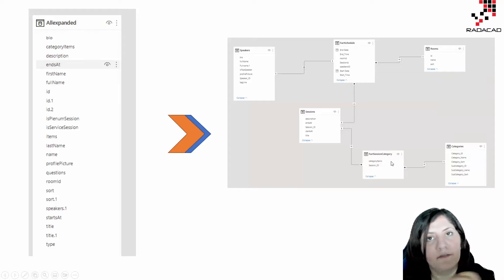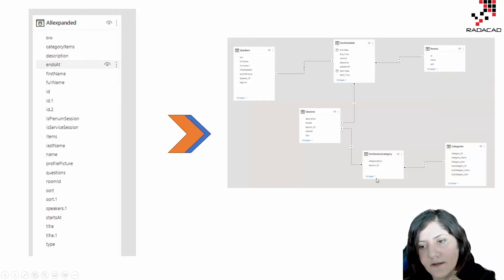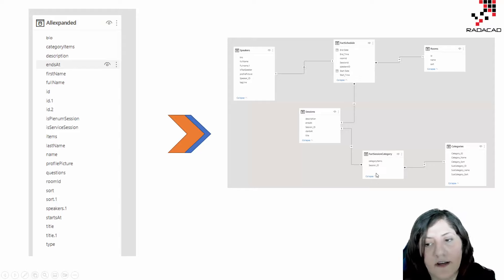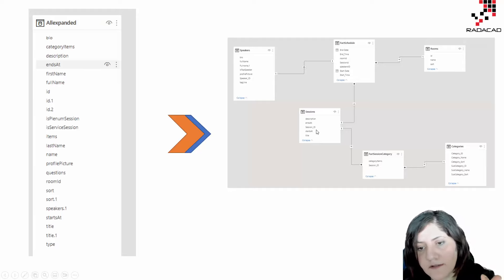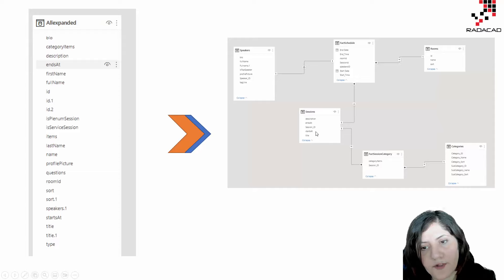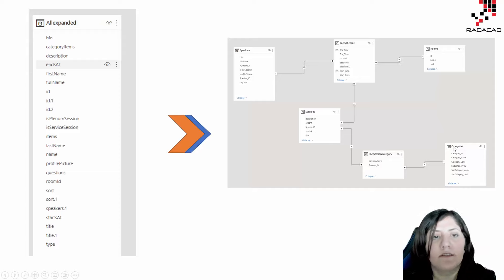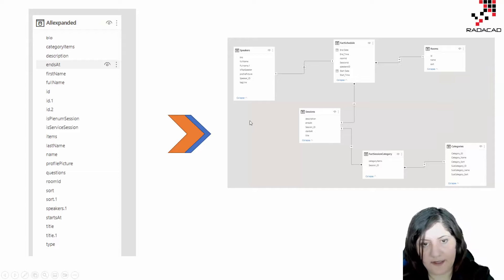I have another factless fact table where again I don't have a numeric value, but here I'm going to get more information about the session and its related category. So let's see how I can create that.